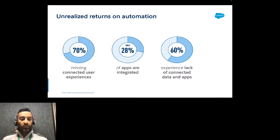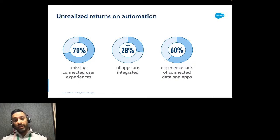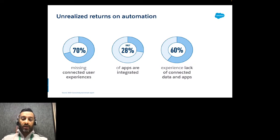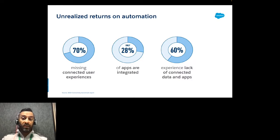From the 2022 Connectivity Benchmark Report: 70% of organizations say automation fails due to missing connected user experience; 28% say apps are not integrated well; and 60% cite connectivity, data, and app integration issues. It's mainly the integration architecture of day-to-day business apps causing automation to be unstable, unsustainable, and unable to scale.